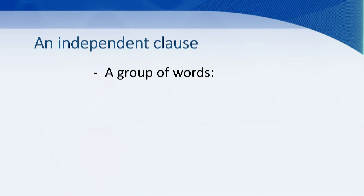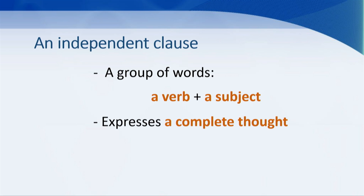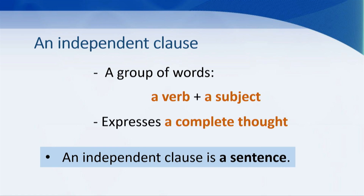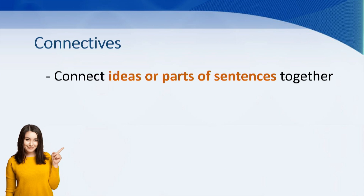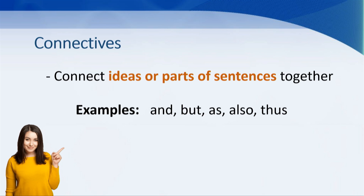An independent clause is a group of words that contains a verb and a subject and that expresses a complete thought — an independent clause is a sentence. As for connectives, they connect ideas or parts of sentences together. Some common examples of connectives are: and, but, as, also, thus.